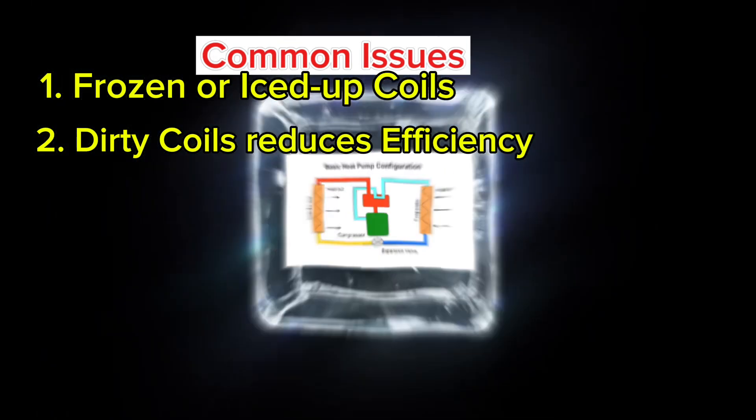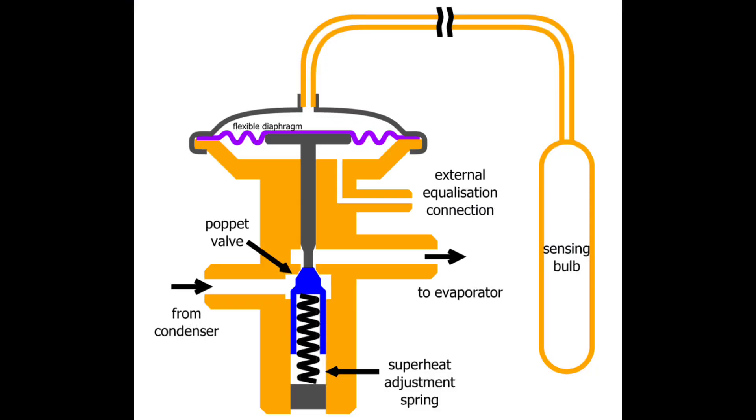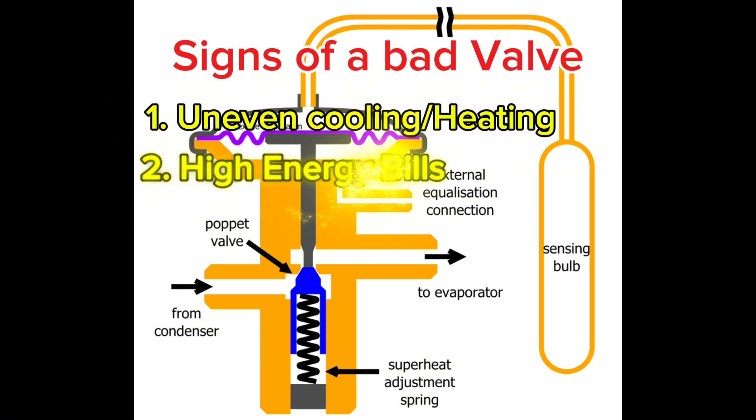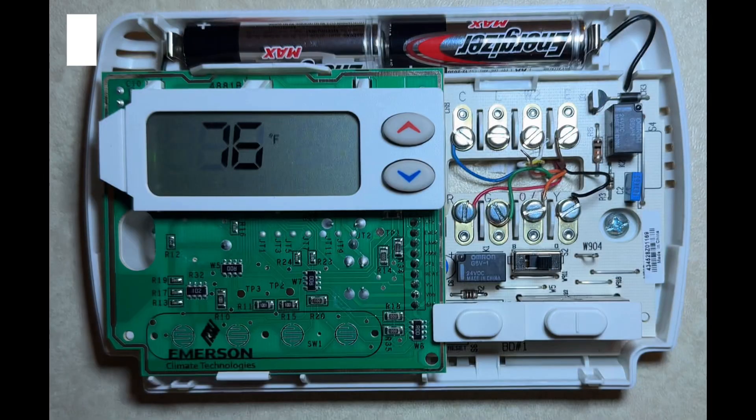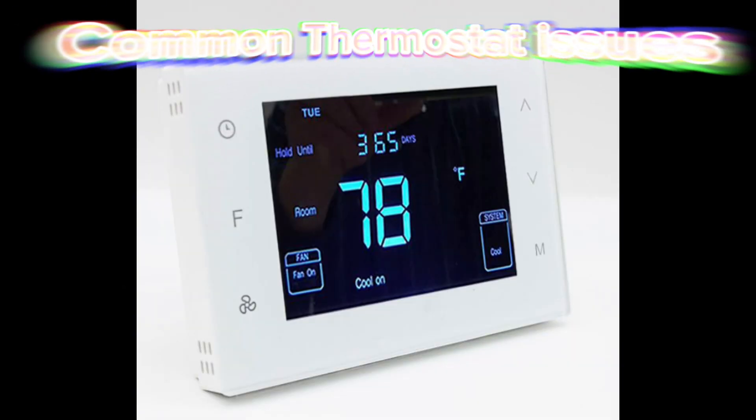The expansion valve controls how much refrigerant enters the evaporator coil. If it clogs up, your system will not cool or heat properly. Your thermostat tells the heat pump when to turn on or off. A bad thermostat can cause erratic cycling or prevent the system from running at all.